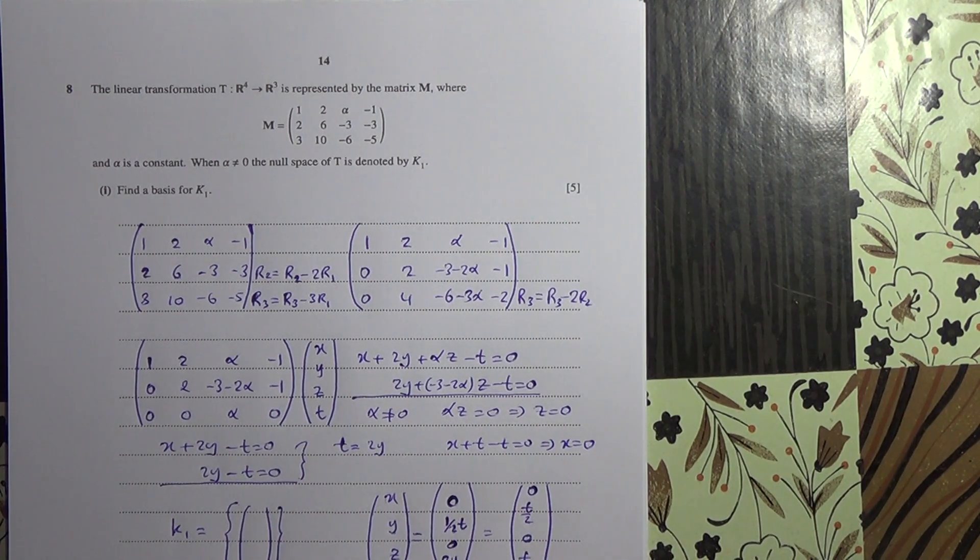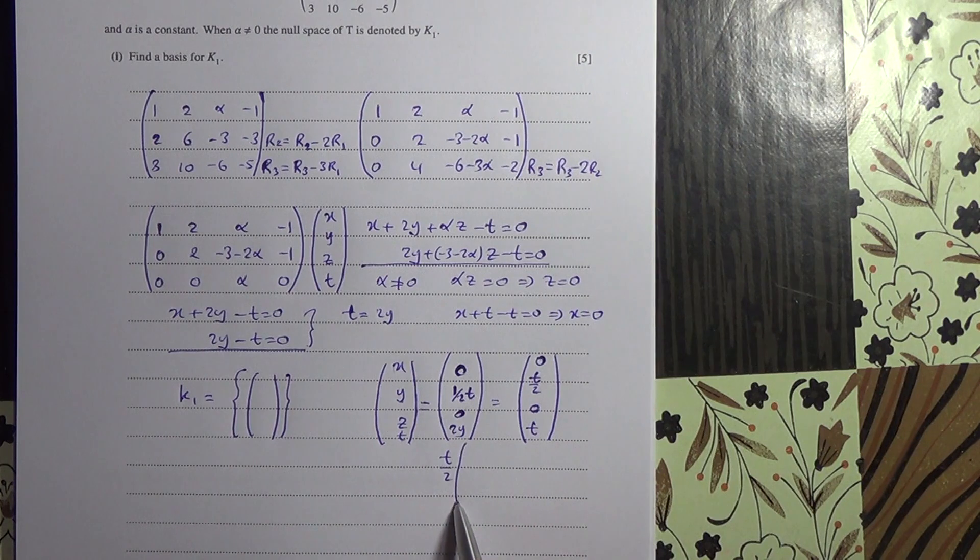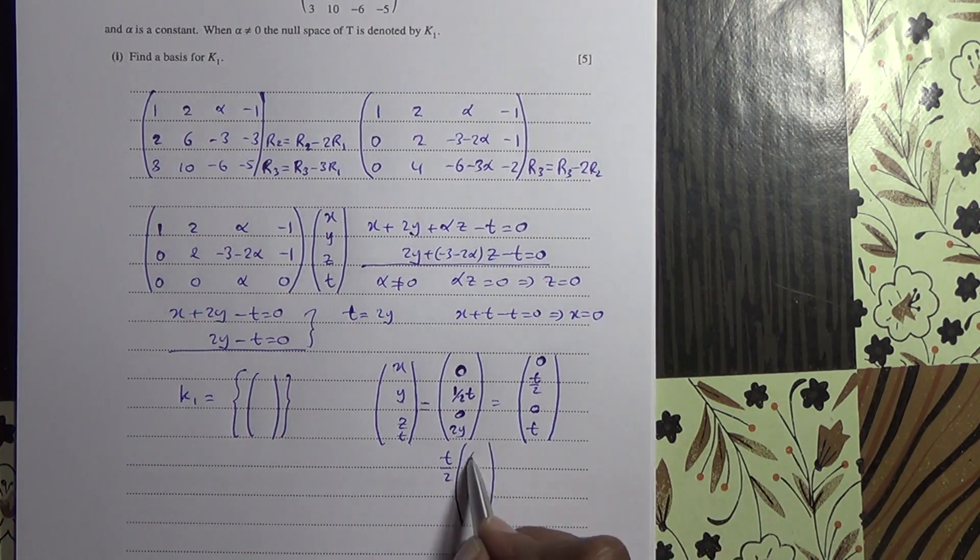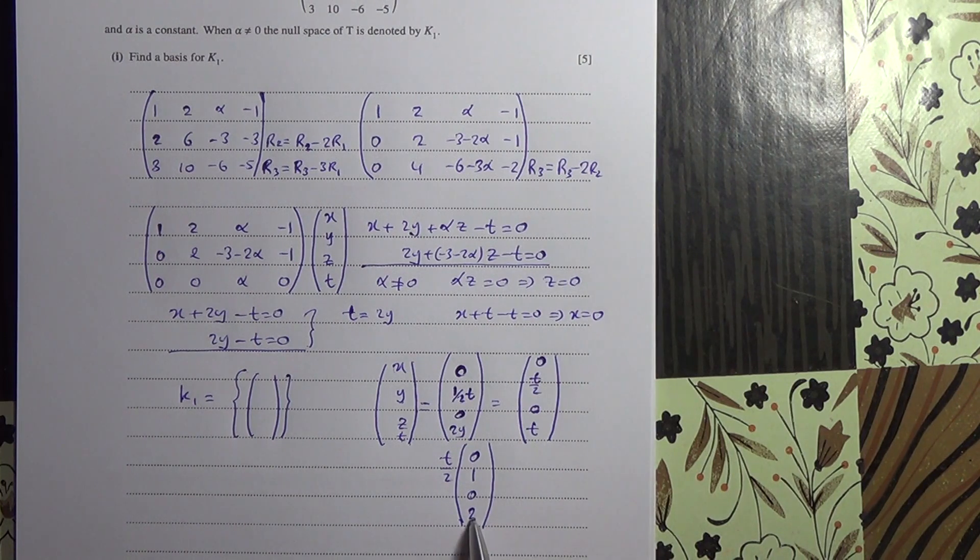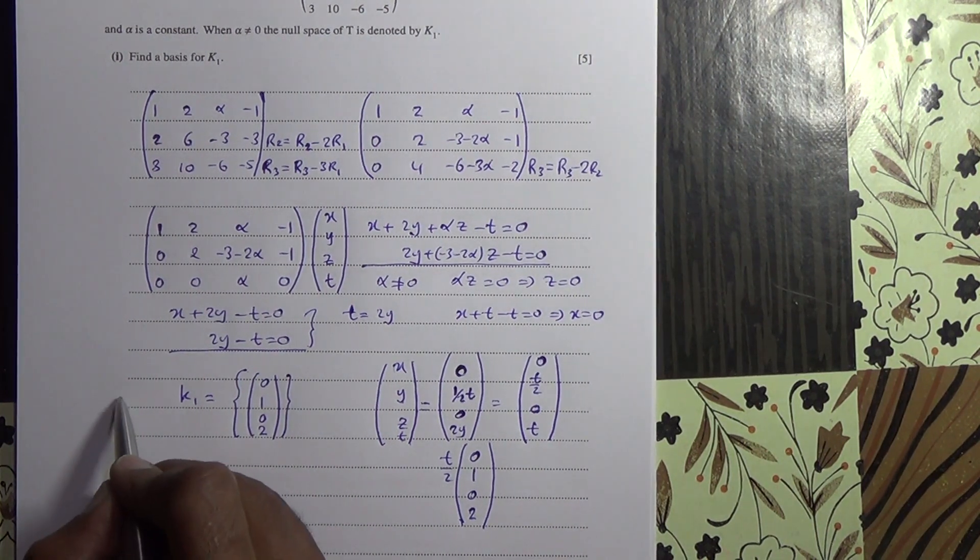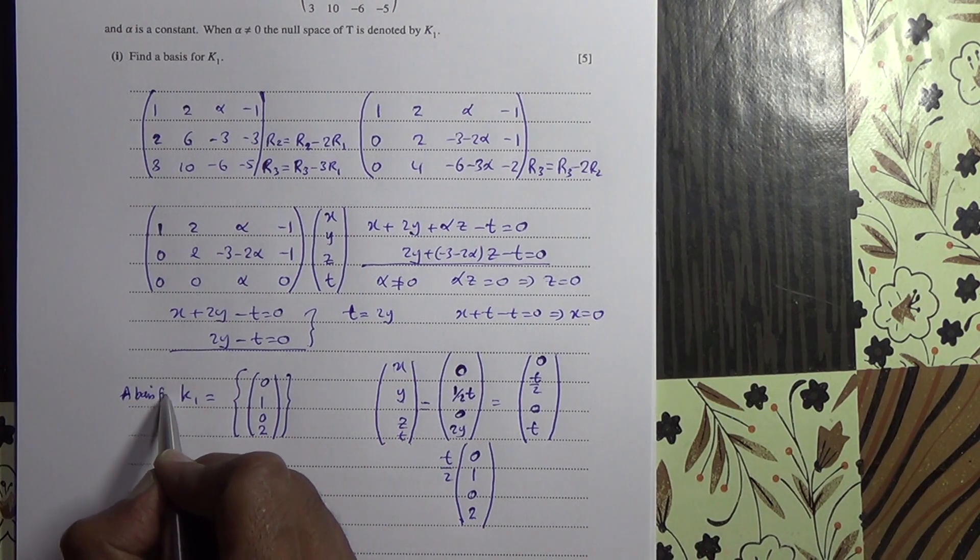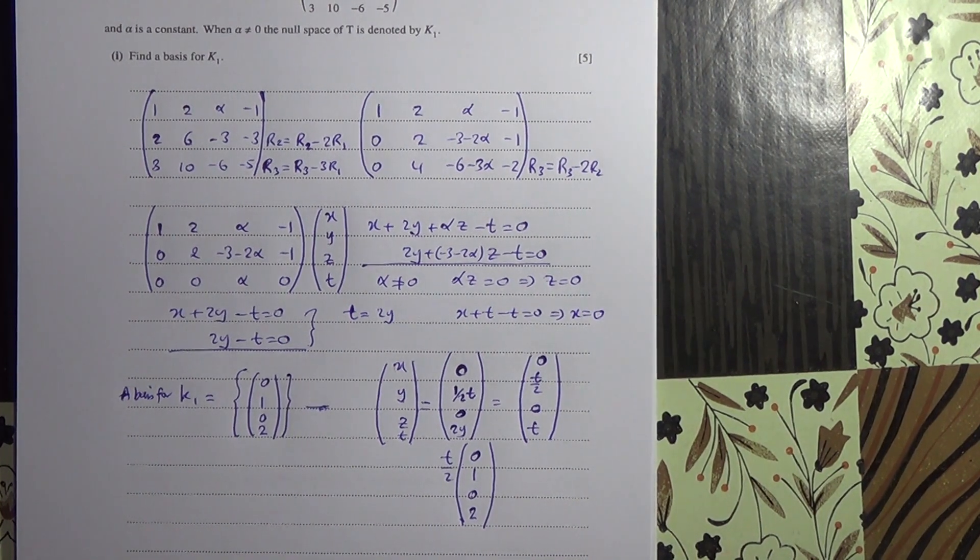So if we remove them, we'll put T over 2 outside. So if we put T over 2 outside, and you have 0, you have 1, because 1 times T over 2 is T over 2, 0 times 1 is 0, and then you get 2 here, because 2 times T over 2 is T, and T is here. So basically we're saying then 0, 1, 0, 2. So this is a basis for K1. So here's the answer to the first part of the question.